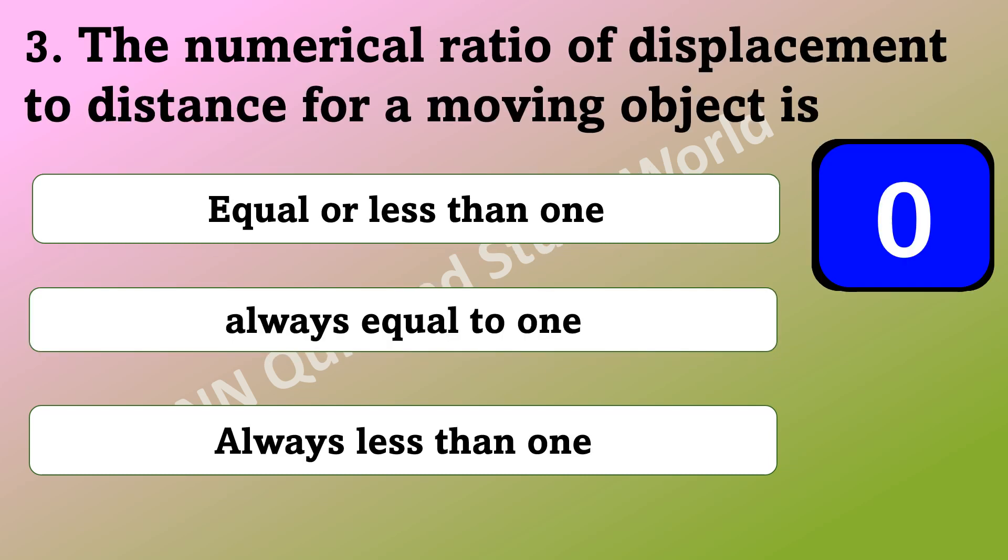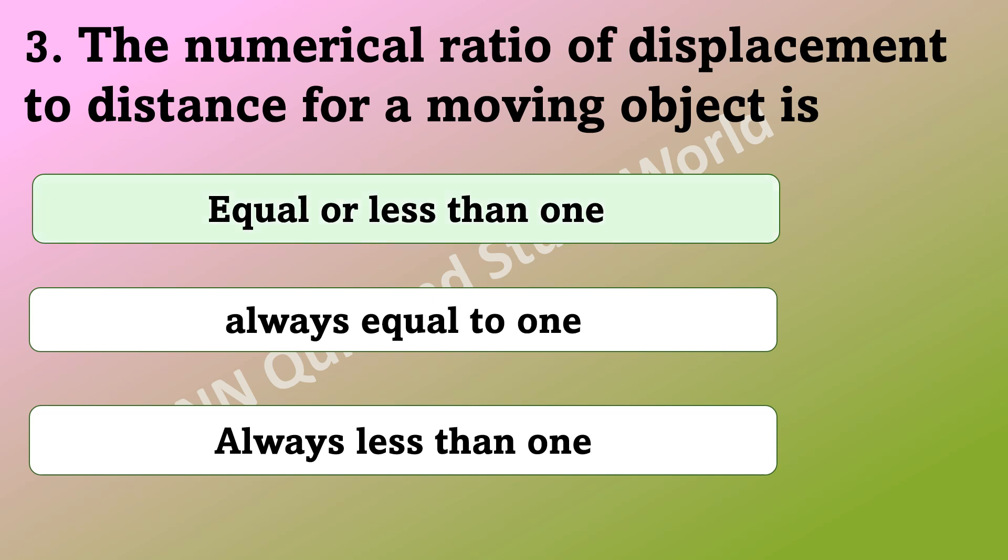What is the numerical ratio of displacement to distance for a moving object? Is it equal or less than one, always equal to one, or always less than one? The answer is equal or less than one.